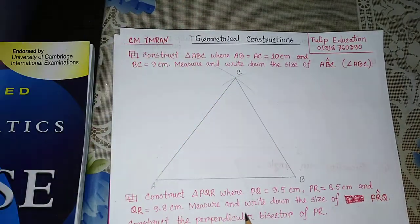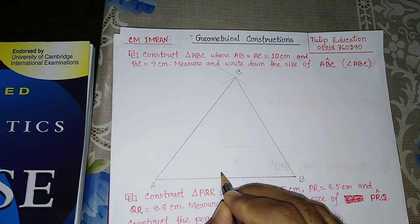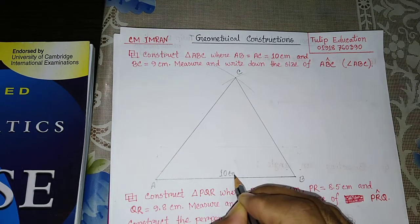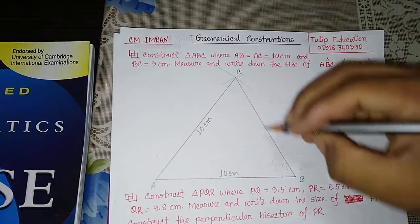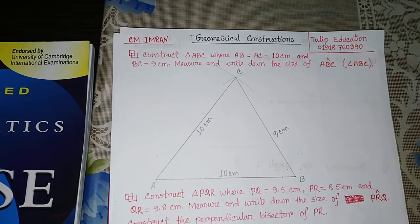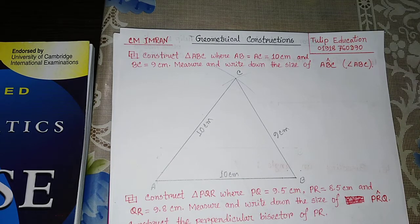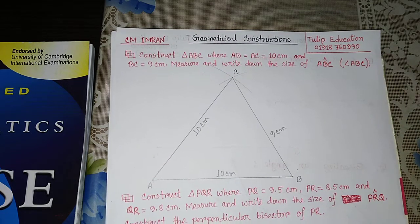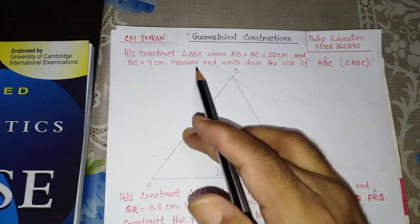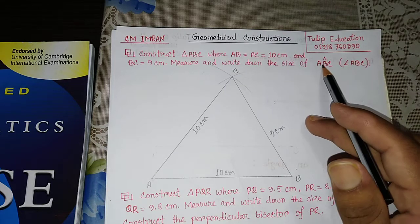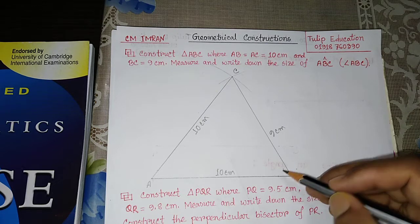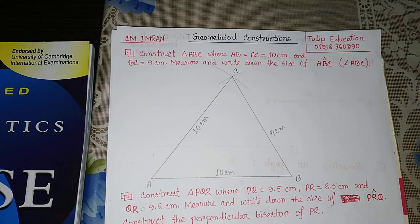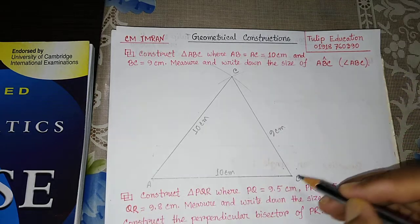The distance is 10cm — we can write here this one is 10cm. Likewise, AC is equal to 10cm and BC is equal to 9cm. So we can write down the size of angle ABC. That means we find angle B using a protractor. We can write down the angle measurement and read the protractor at the middle point, placing it at vertex B.